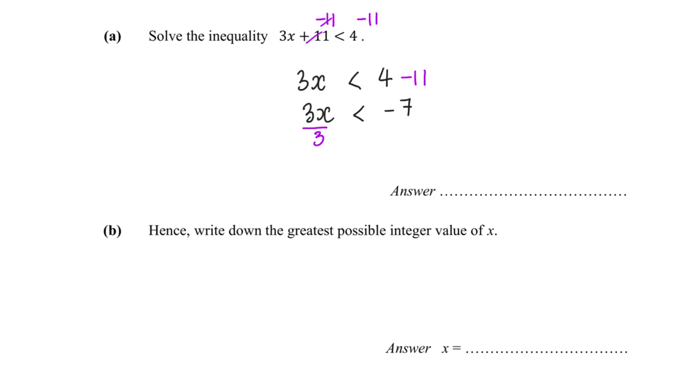Since we are dividing by a positive number, the sign remains the same. Negative 7 divided by 3 will be equals to negative 2 and 1 over 3. So x is less than negative 2 and 1/3.